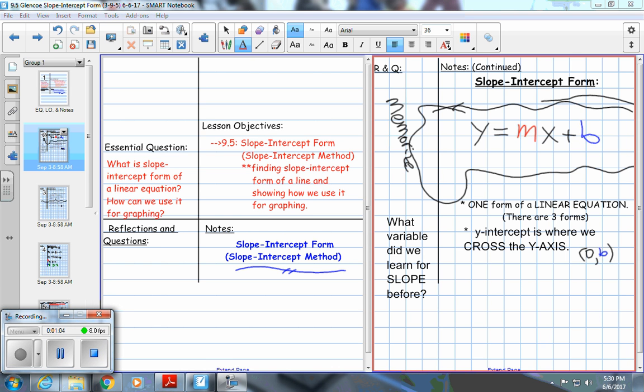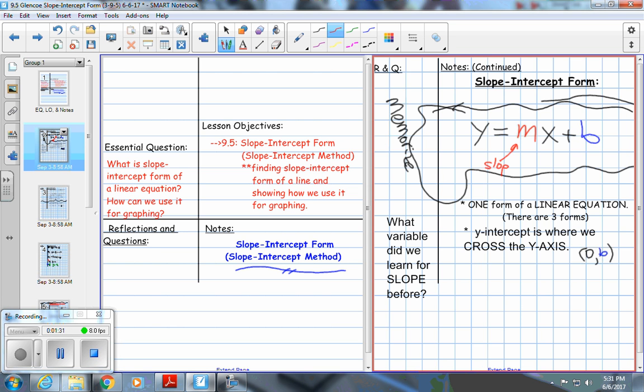So the generic formula for slope-intercept form is y equals m times x plus b. Now remember, what variable did we use for slope in our previous lesson? Yeah, you're right. It's the m. So this formula looks like it has four variables. It's only going to end up with two variables whenever we use it. Our goal is to always solve for m, which is the slope. You're starting to see how mathematicians name this. And this b, that's not a 6, is going to be the location of the y-intercept.